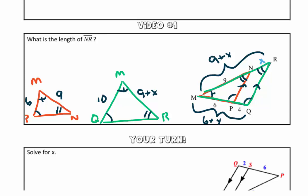So to solve this, we are going to do it just like we've done in all the other problems. We're going to set up a proportion. So we're going to match up our corresponding parts. So 6 over 10 is equal to 9 over 9 plus X.